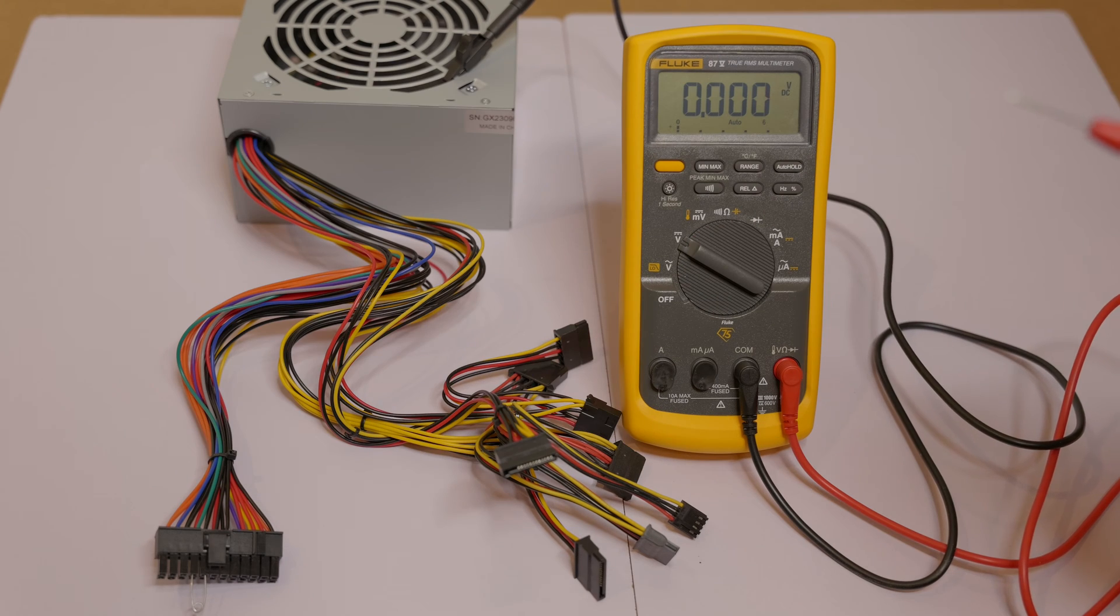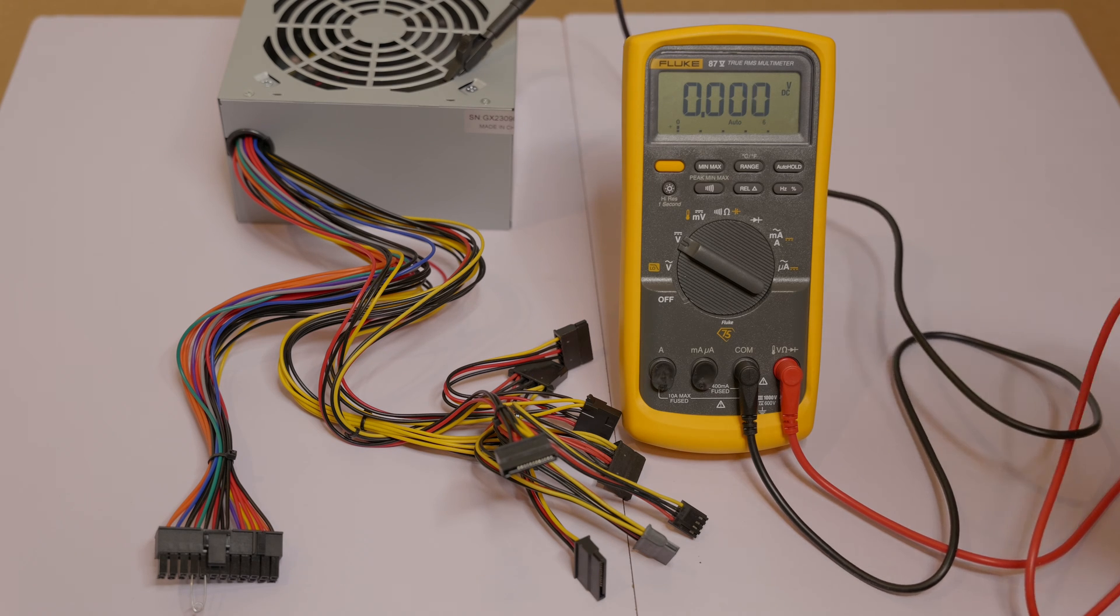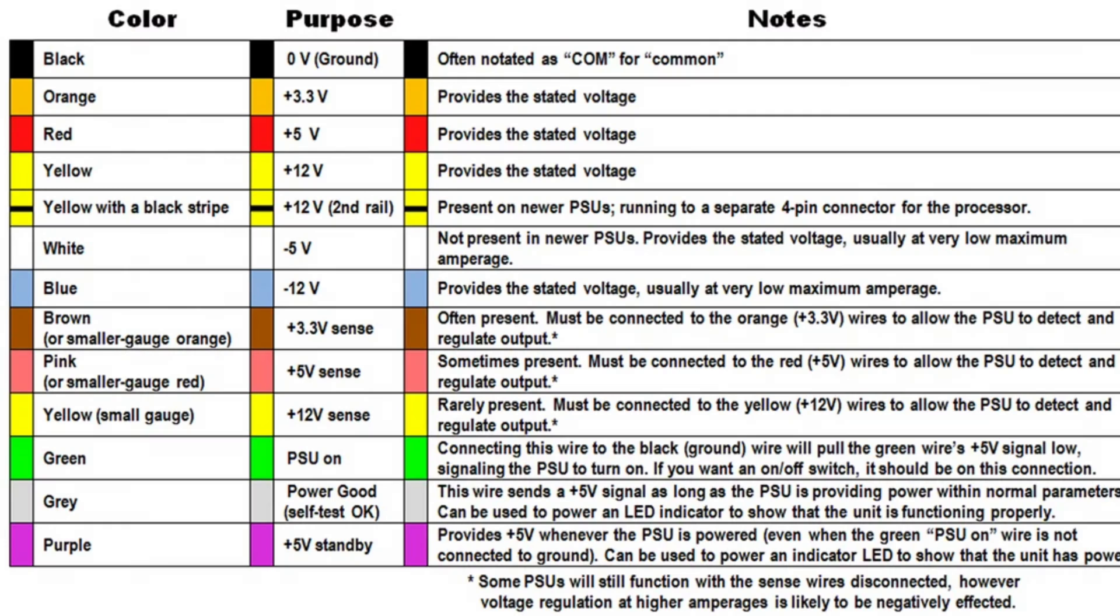So essentially all power supplies are wired the same way as far as voltage. Take a look at this handy chart for reference. I've also posted a link in the description—you can download this chart. It tells you exactly which color wire should produce which voltage.